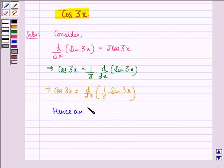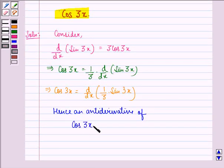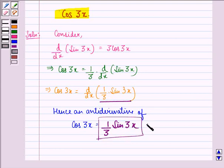Hence, an anti-derivative of cos 3x is equal to 1/3 sin 3x. So this is our answer to the question. I hope you understood the question and enjoyed the session. Have a good day.